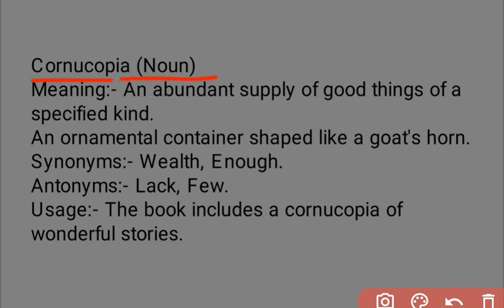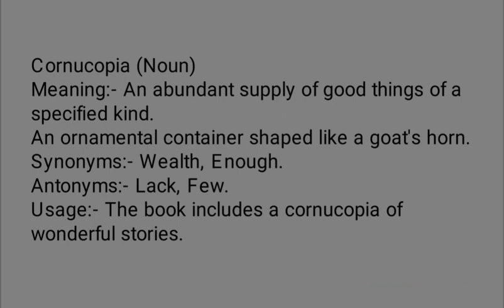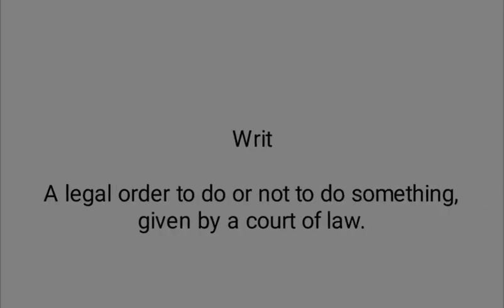Next word is 'cornucopia,' a noun meaning an abundant supply of good things of a specified kind — more than enough quantity supplied. It also means an ornamental container shaped like a goat's horn. Synonyms are well and enough; antonyms are lack and very few. Example: 'The book includes a cornucopia of wonderful stories' — meaning there are plenty of stories in the book.